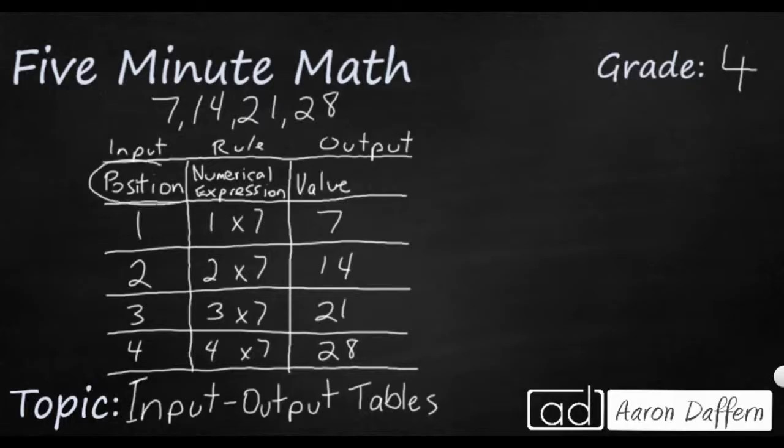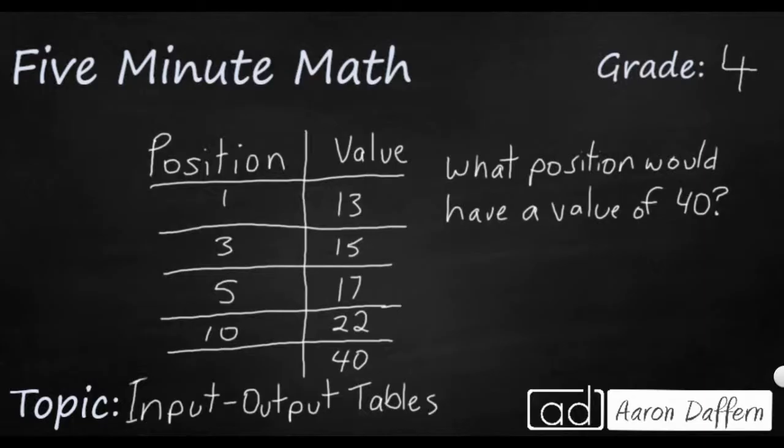Let's look at another example. Sometimes you're going to see a problem without the numerical expression column in the middle, but you might see positions and values. And as you see here, we have a position of 1, 3, 5, and then the pattern breaks. It goes up to 10. They don't always keep the pattern.